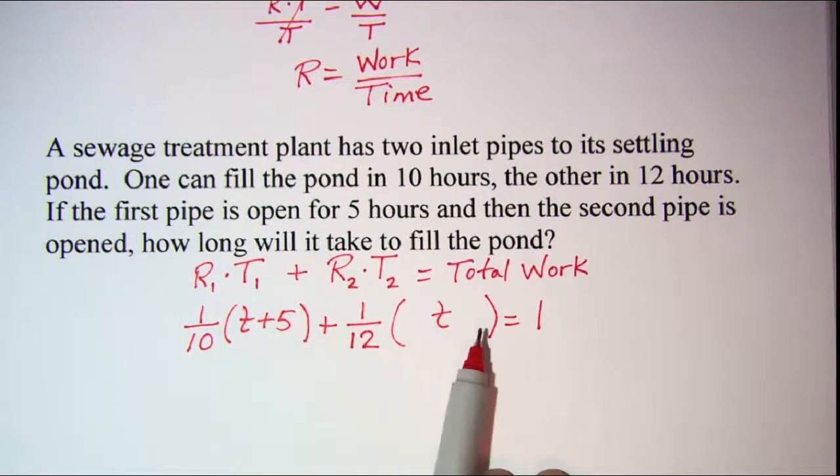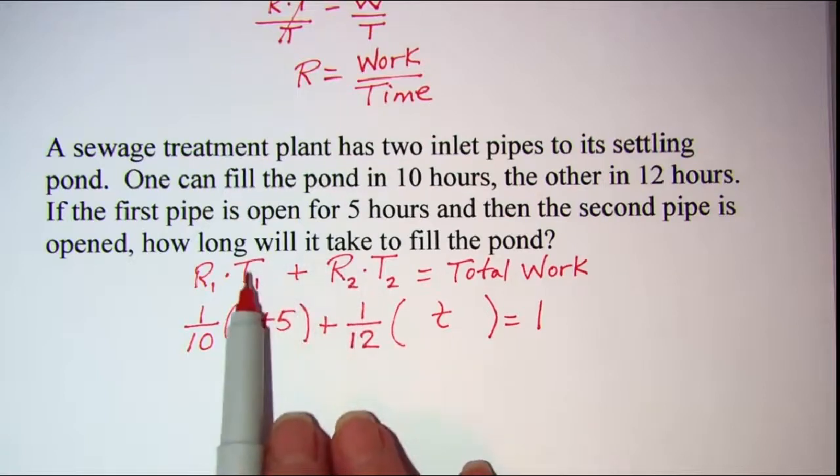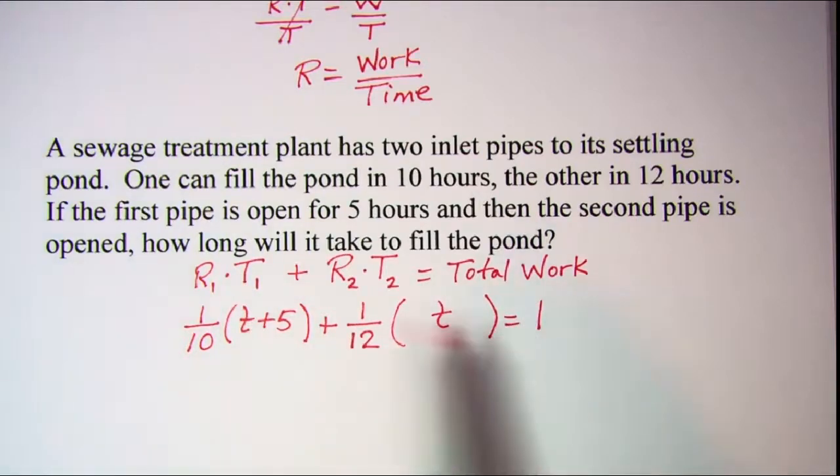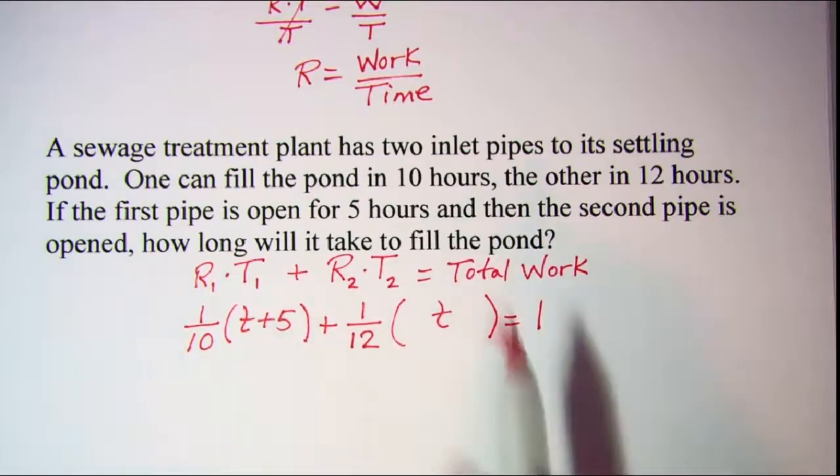So this is our equation. We need to solve for t, but then we need to find the total amount of time that it takes to fill the pond. So we'll be needing this one, which is t plus 5. Alright, so let's distribute and remove parentheses.